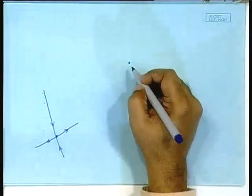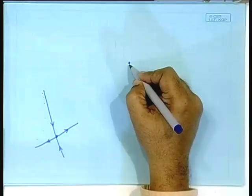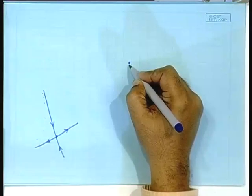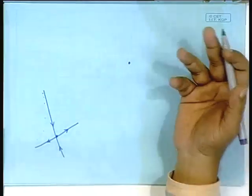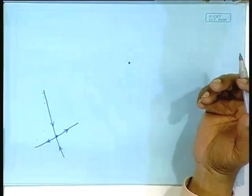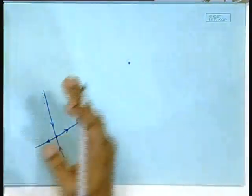Beyond a certain parameter value, this fellow becomes unstable. You have the period-2 orbit, then the period-4 orbit and so on. You have seen the bifurcation diagram of this system on the computer, so you know that it follows the same sequence of period-doubling cascade, but at some point it also becomes chaotic.